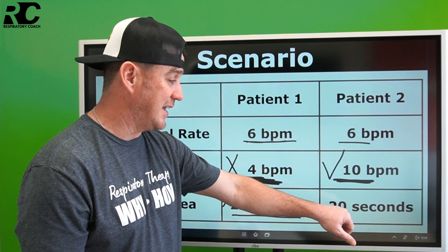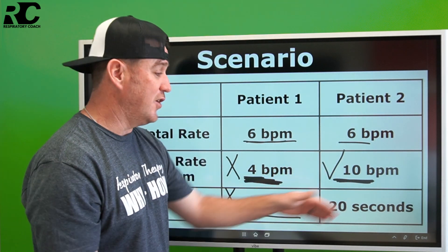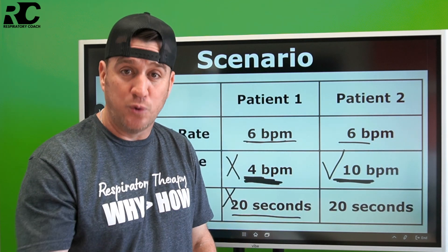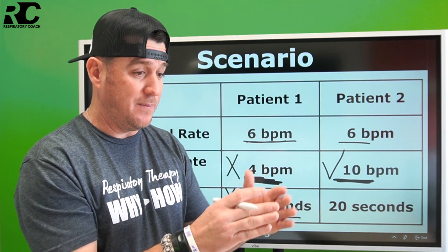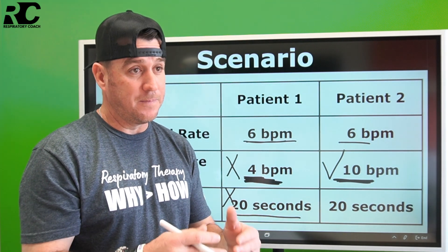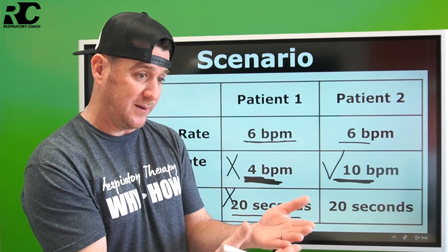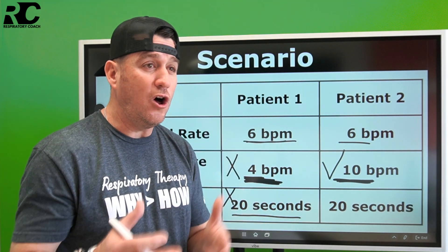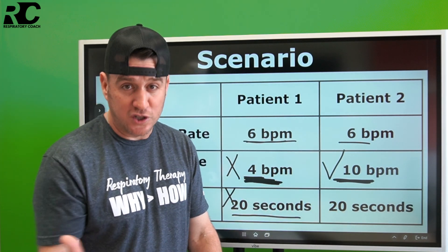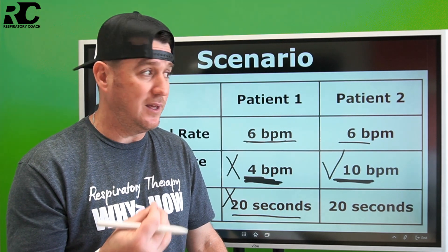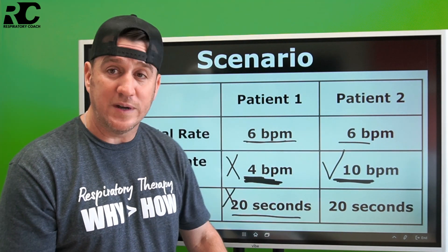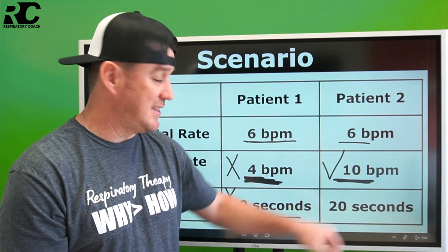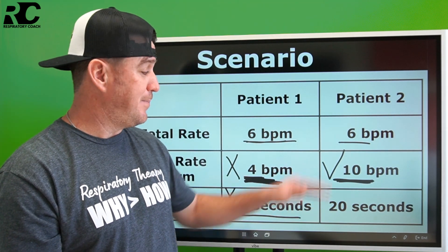Patient two is also not going to trigger an apnea alarm — it's appropriately set at 20 seconds. That alarm only fires if the time between breaths exceeds 20 seconds. If you think about it, a 20-second apnea alarm roughly corresponds to three breaths per minute. So the rate would have to get very low to activate it. If you're breathing six, seven, or eight times a minute, you're likely not exceeding 20 seconds between breaths.